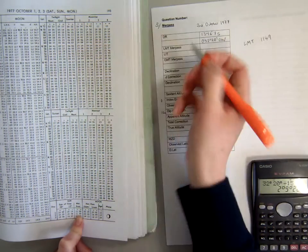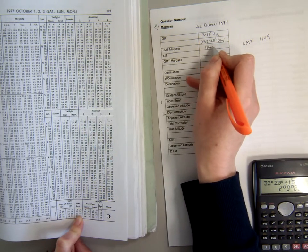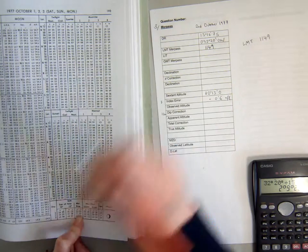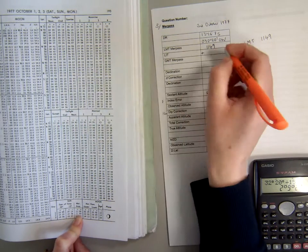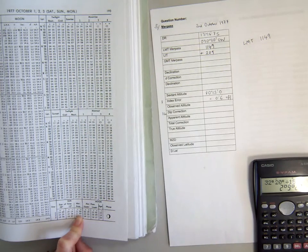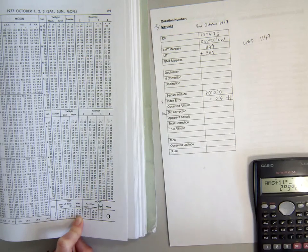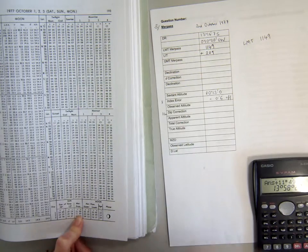So we can actually do this here. If the LMT is 1149 and my LIT, obviously it's west so I'm going to be adding it on, is 2 hours and 9 minutes, and again I'm disregarding that 20 seconds, I'm going to get a GMT of 1358.